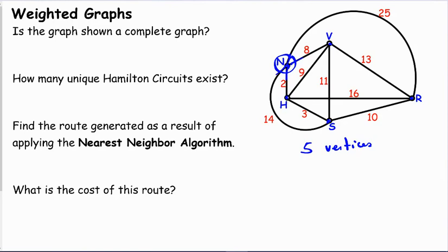Well, all of the vertices need to have a degree of four for that to happen. So let's look at V. One, two, three, four. Good. R. One, two, three, four. S. One, two, three, four. And H. One, two, three, four. So as long as every vertex has a degree that is equal to one less than the number of vertices, then it is a complete graph.